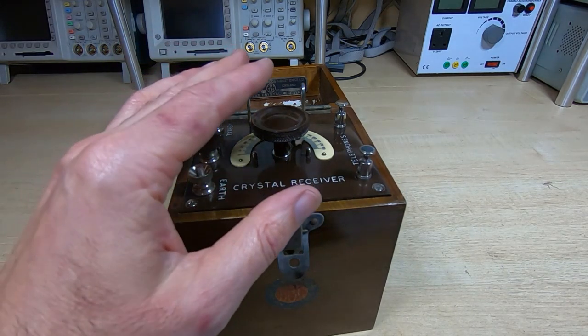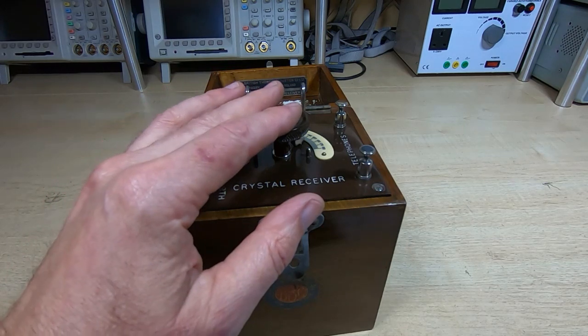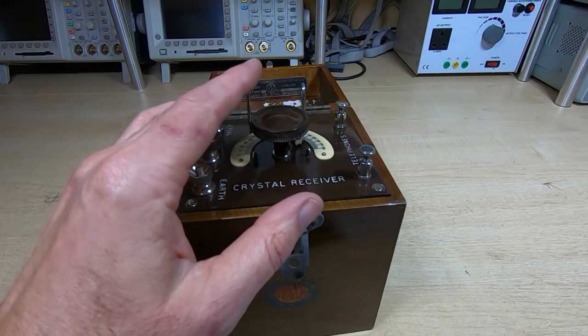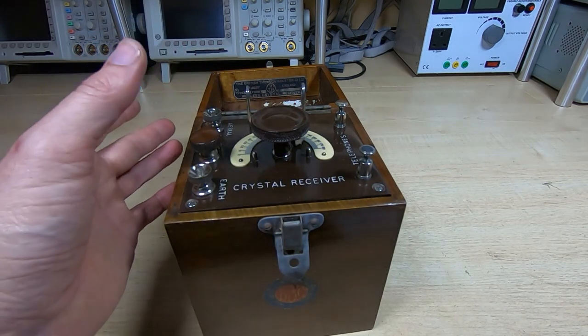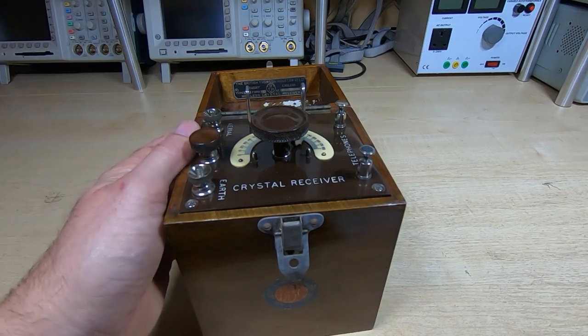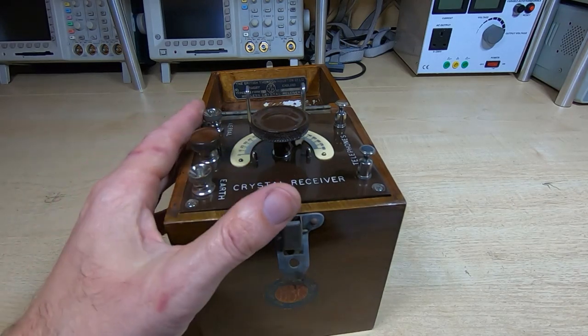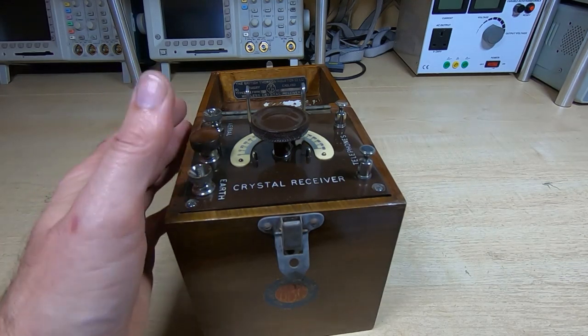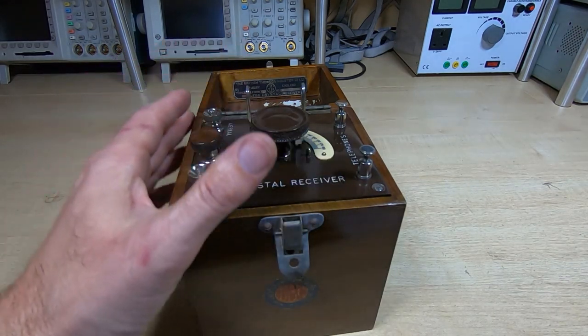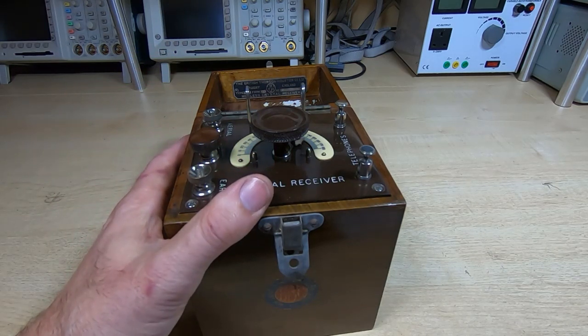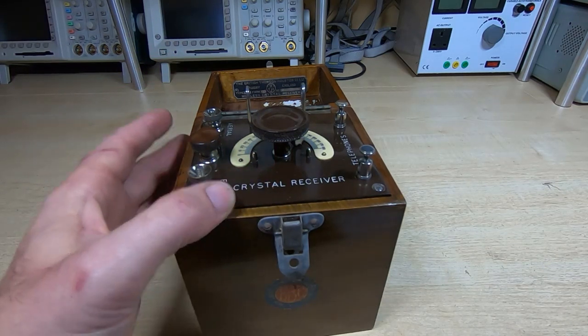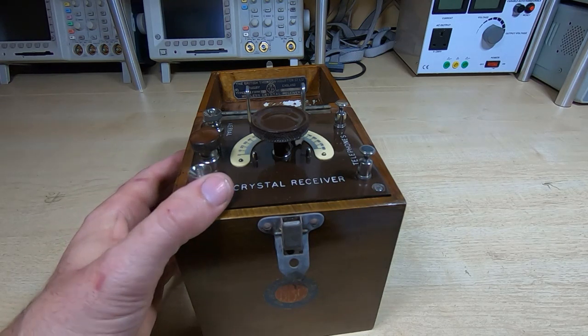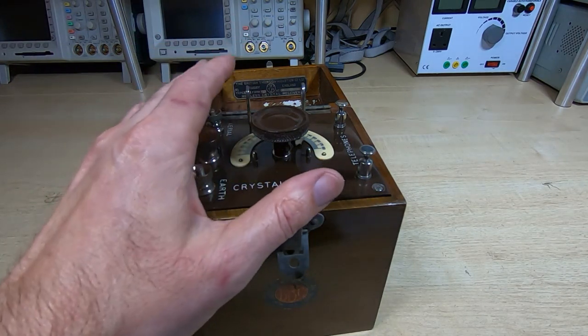This particular one was referred to as the Bijou type and was sold under the trade name of Radiola. It was manufactured in Rugby by British Thompson Houston company, but they made a whole range of electrical equipment from electric motors through to control systems.